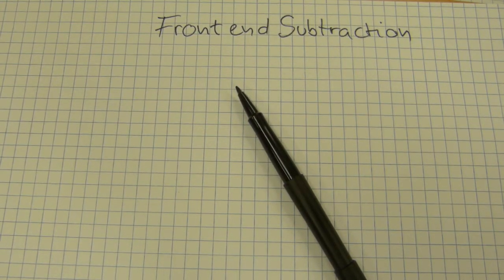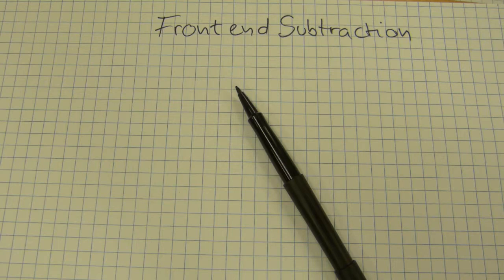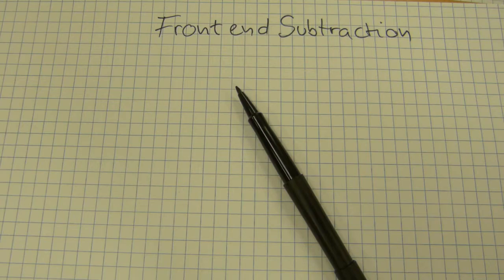Front-end subtraction is a different way of doing subtraction. The kind of subtraction you probably grew up with uses borrowing, but there is no borrowing in front-end subtraction. I'll show you how it works in this video using whole numbers and decimals.